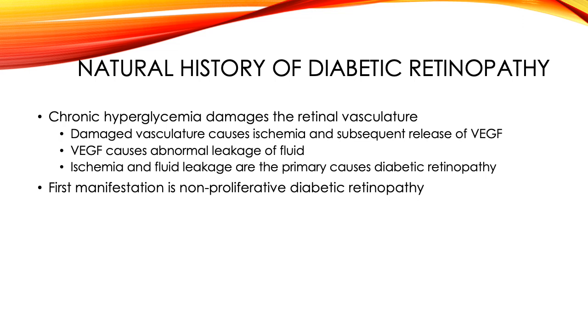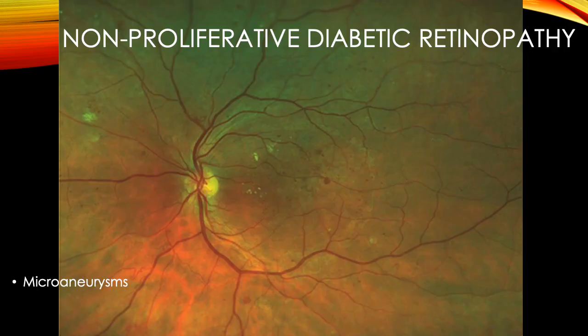The first manifestation of diabetic retinopathy is called non-proliferative diabetic retinopathy. Here we have a wide-field photograph of a left eye with non-proliferative diabetic retinopathy containing microaneurysms, which are small bulges in the blood vessels.